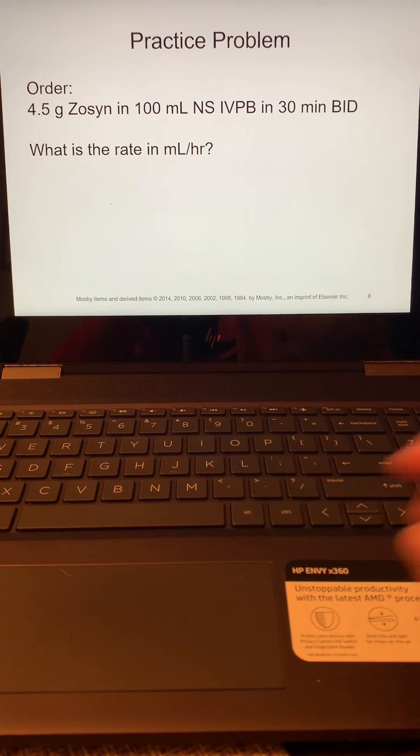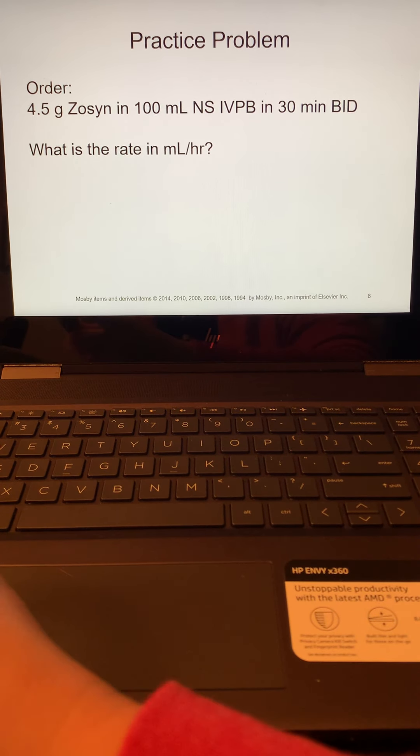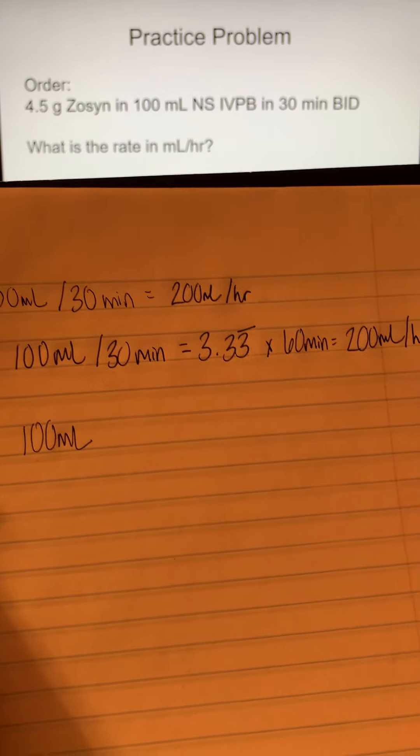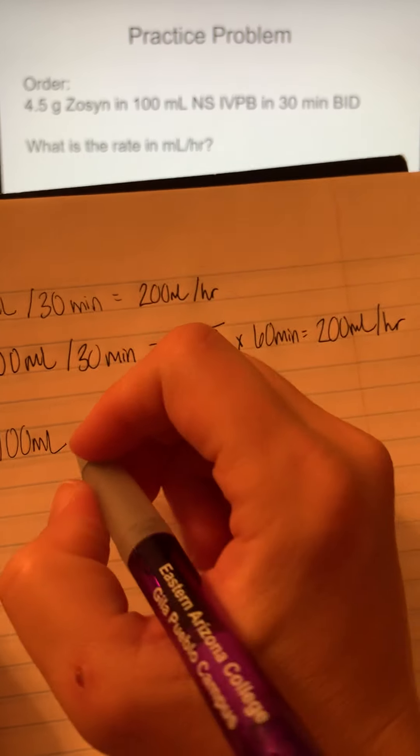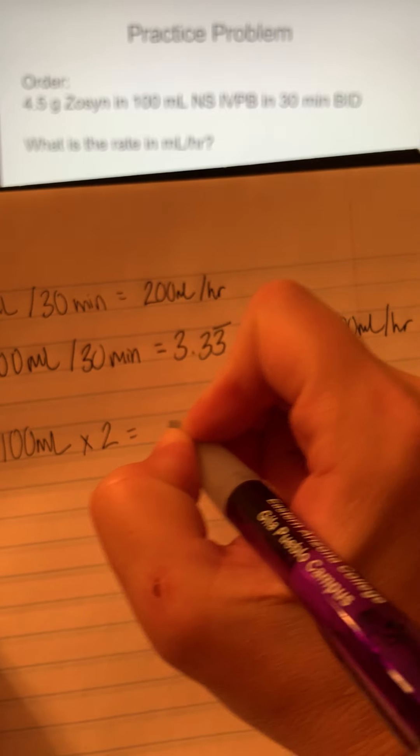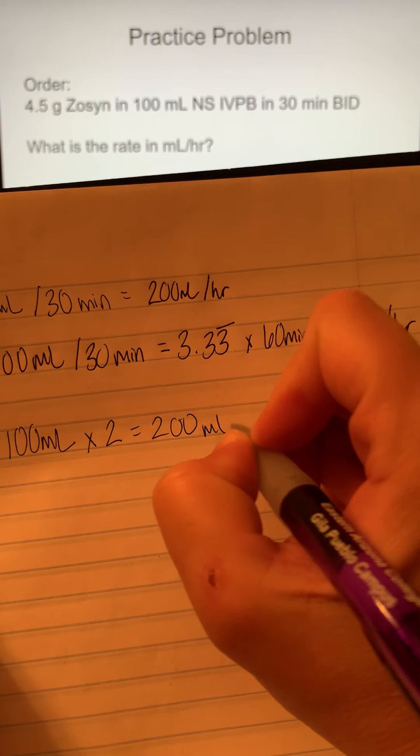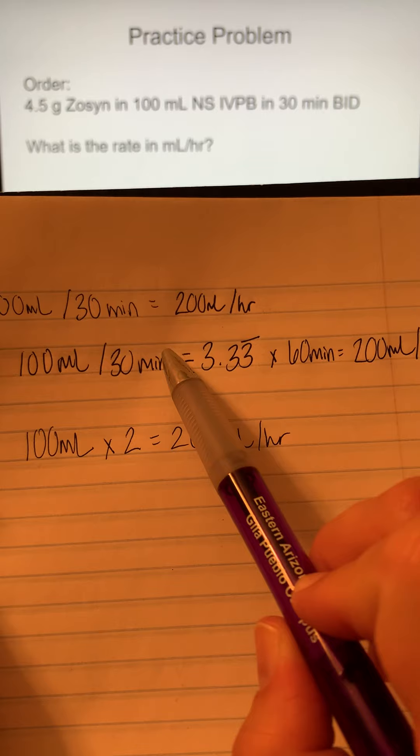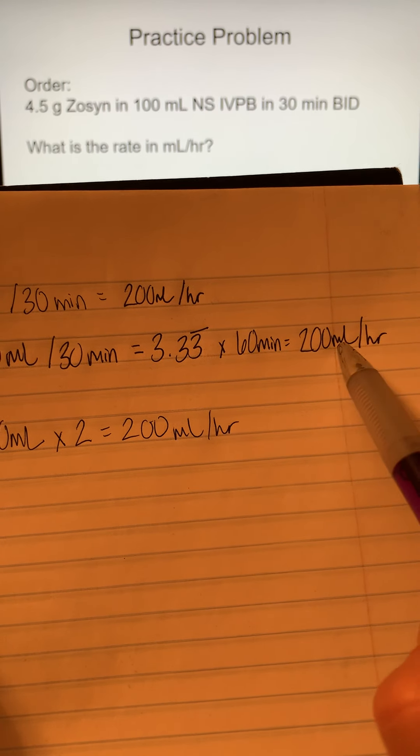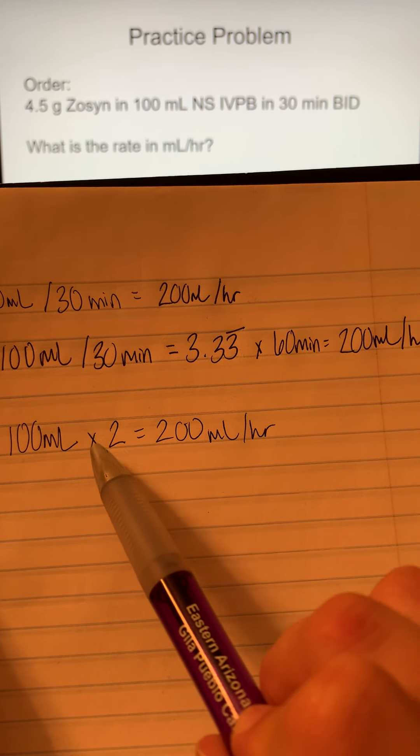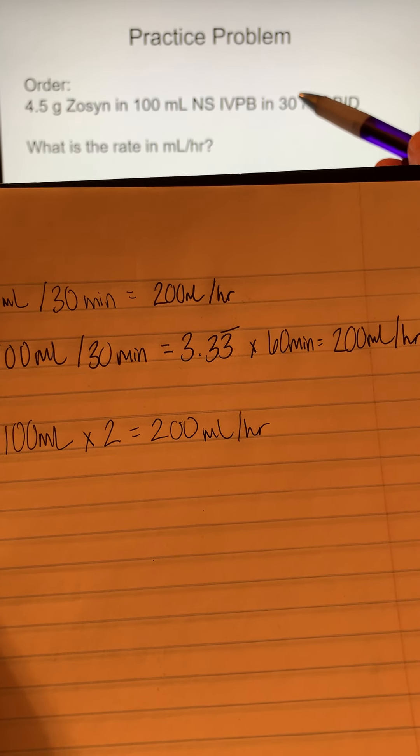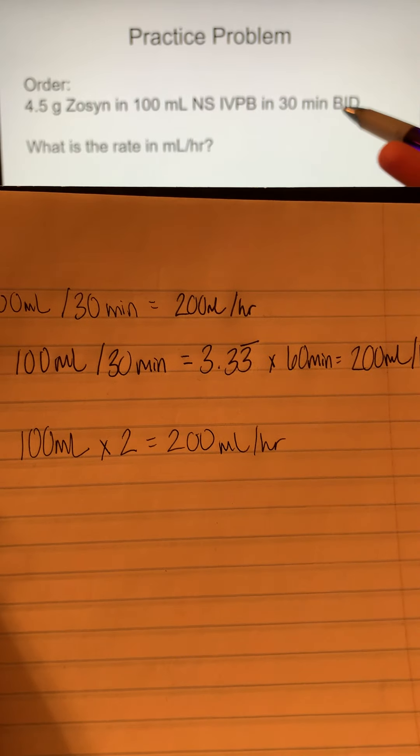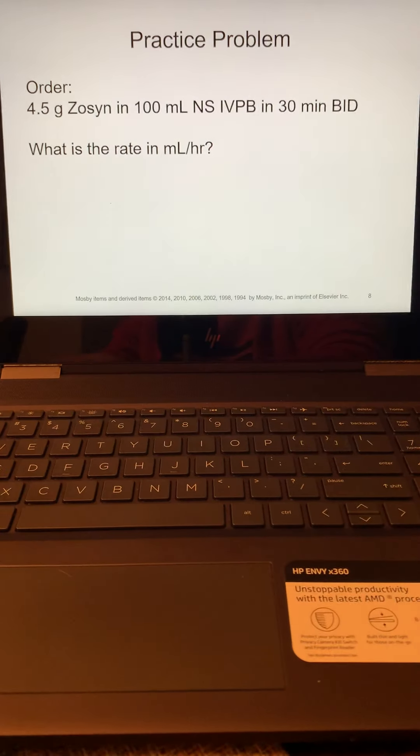You can also do it another way. You can take your total volume, which is 100 milliliters. And there are two sets of 30 minutes in an hour. So you would multiply that by two and you would get 200 milliliters per hour. So you can do it either way. You can do your total volume divided by however many minutes and then multiply by 60 to get your milliliters per hour. Or you can do your total volume times however many sets you have in an hour. So if you have 30 minutes, you have two sets of 30 minutes in an hour. If it were over 15 minutes, you have four sets of 15 minutes in an hour, whichever way is easiest for you.